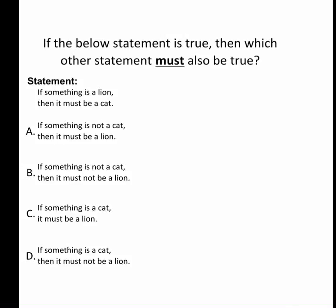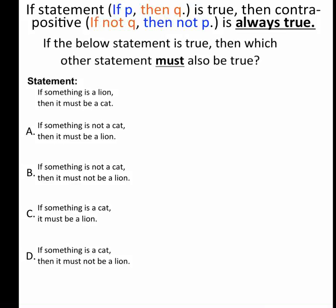And what we know about conditional statements, or if-then statements, are that if I take its two pieces, if-p, then-q, and I flip them and put nots in front of them, so turn if-p, then-q into if-not-q, then-not-p.